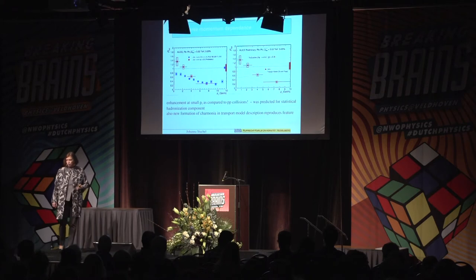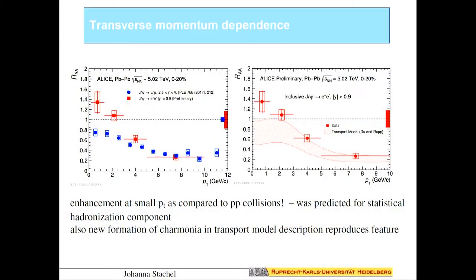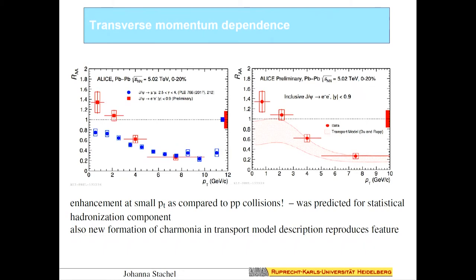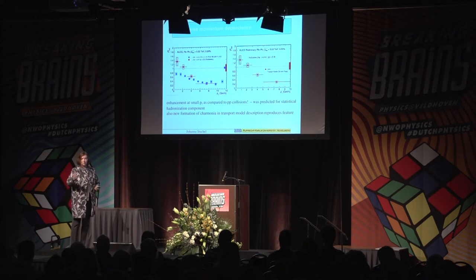We can also look at charmonium yield as a function of transverse momentum. Statistical recombination at hadronization requires thermalized charm quarks, which is most likely at low momenta of order 1–2 GeV. The red points at mid-rapidity even exceed 1 — more than in a proton-proton collision with nothing happening — while at forward angles it is somewhat less, because the charm yield peaks at 90 degrees and falls off forward and backward. This is entirely consistent with the deconfinement and recombination picture.